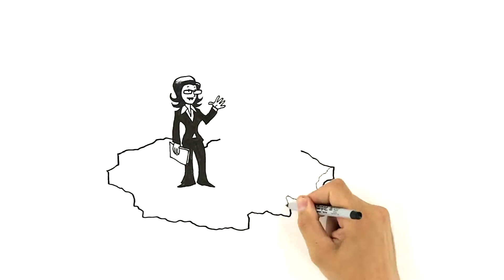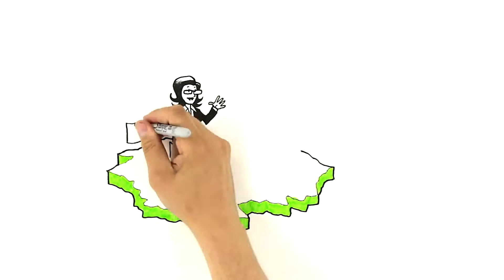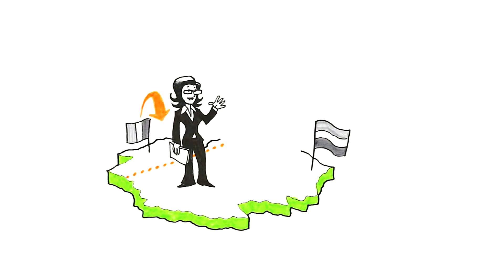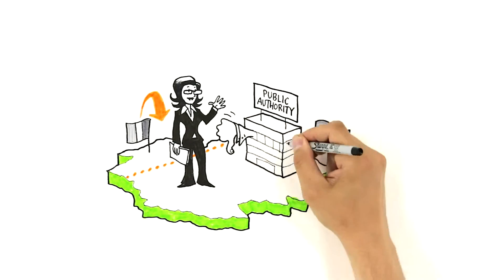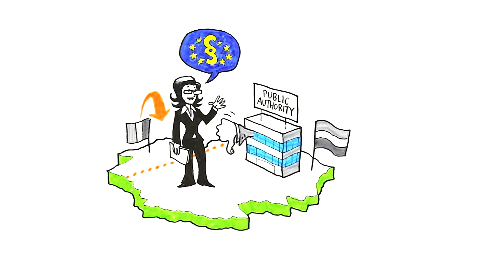Companies have the right to set themselves up, provide services and do business anywhere in the EU, Iceland, Norway and Liechtenstein. Sometimes, though, public authorities might not respect your EU rights.